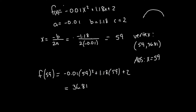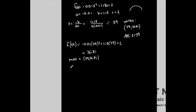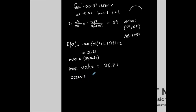Being that the parabola faces down, that tells me that the vertex is a maximum. And the maximum is at the point (59, 36.81). Sometimes we separate the vertex into: the maximum value of this equation is the y-coordinate of the vertex, and it occurs at the x-coordinate of the vertex. So sometimes we separate it like that depending on the question.